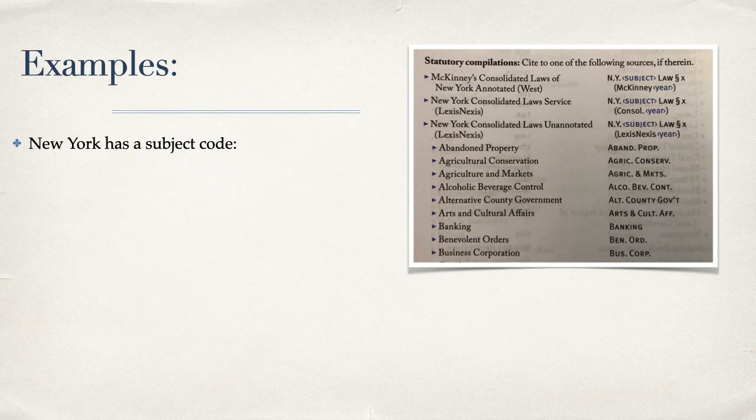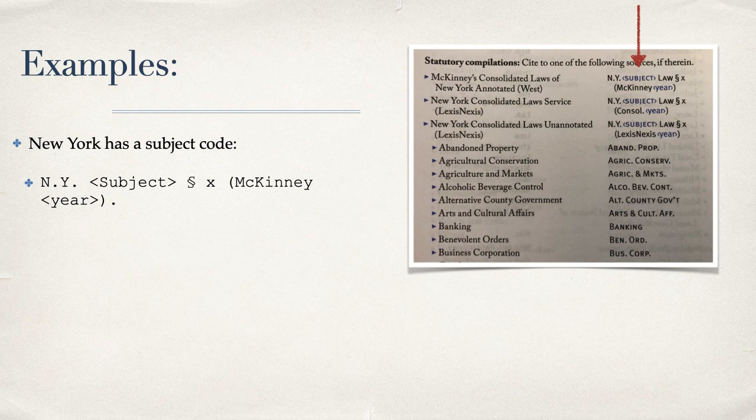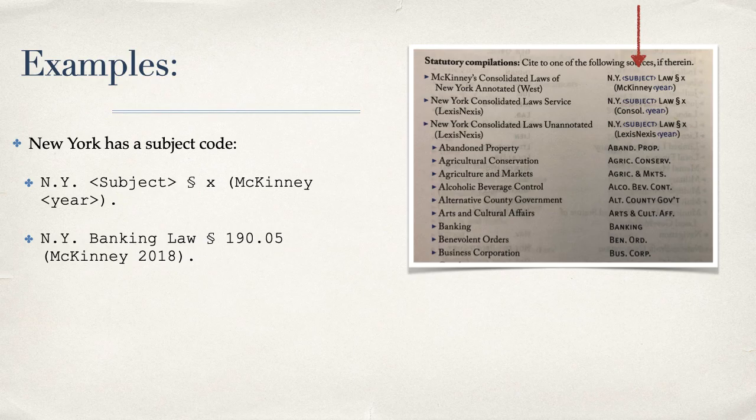You can tell whether a state has a subject code by looking at the statutory compilation section of the jurisdiction in T1.3. You can see here at the red arrow, the abbreviation guide lets you know that you need to insert a subject by placing subject inside chevrons or angle brackets. The blue book flags all items that need to be filled in by printing them in blue. The chevrons or angle brackets do not get reproduced in the cite. Instead, there is a signal to you that you need to add something there.